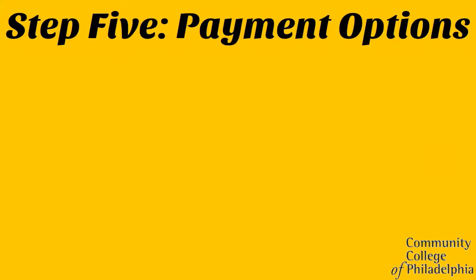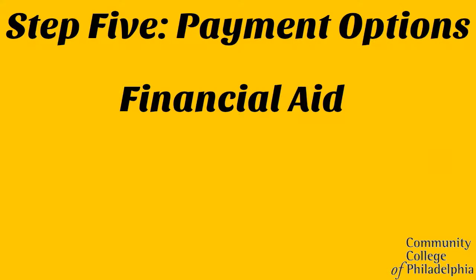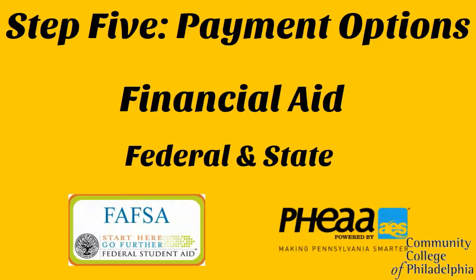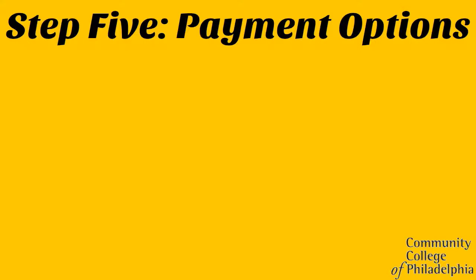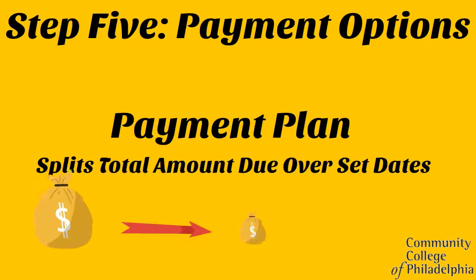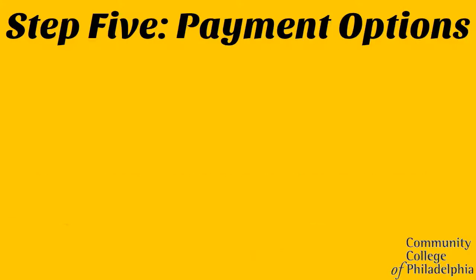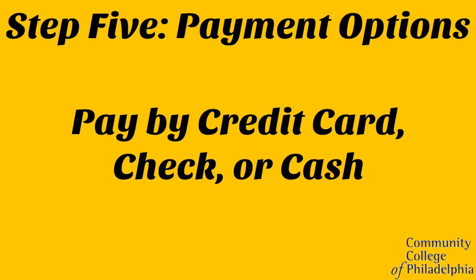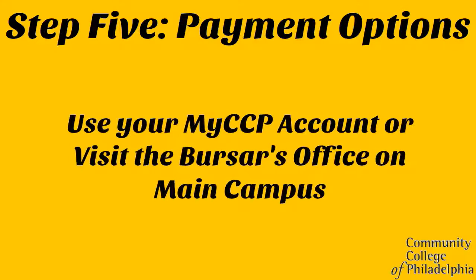Step 5: Pay for your classes. Your final step will be to finalize your payment options. If you're using federal or state financial aid, you'll want to confirm with the financial aid office that everything has been received and confirmed. If you're looking to use our college's payment plan, which can split the cost of your total payments into multiple amounts, you want to do so before the start of the semester. Or, you can pay your courses in full using a credit card, check, or cash by visiting the bursar's office or via your MyCCP account.